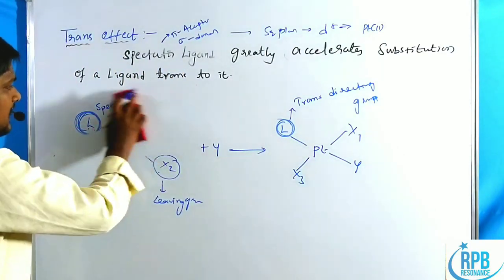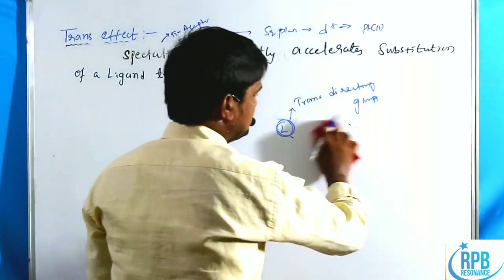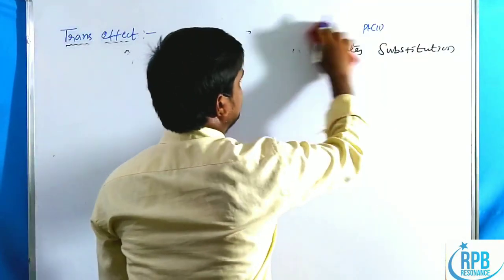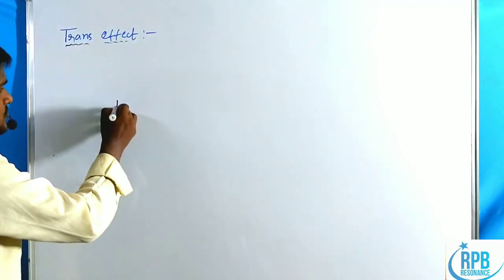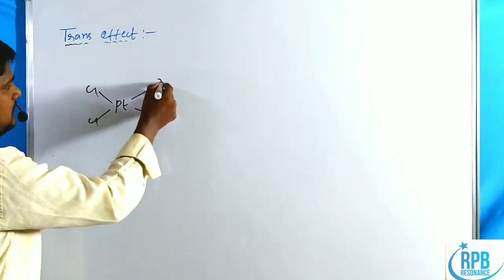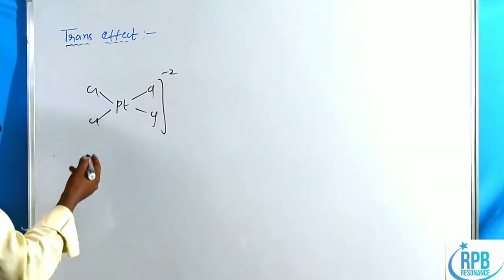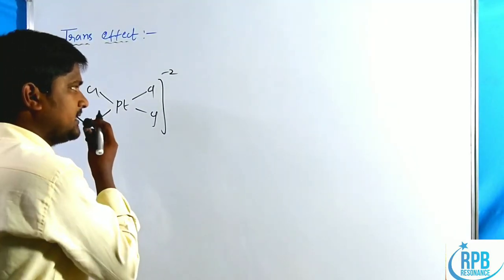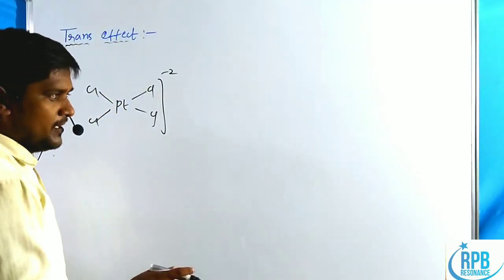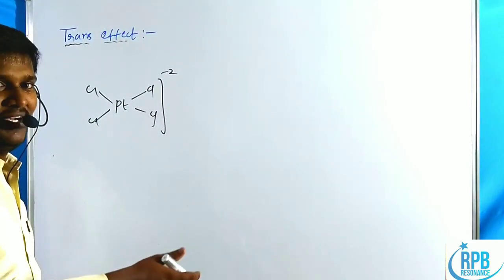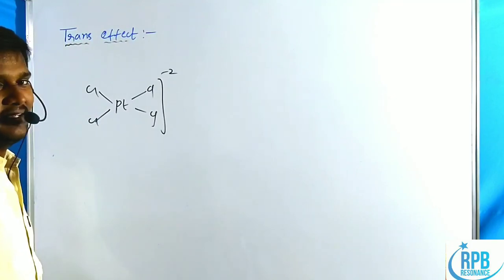Let us take the example of platinum(II) chloride complex, PtCl4^2-. This is a D8 configuration, so it is a square planar complex. In case of nickel complexes, with electron-withdrawing groups it is square planar, but with electron-donating groups it is tetrahedral. There is no such confusion with platinum — platinum coordination number four complexes are always square planar.